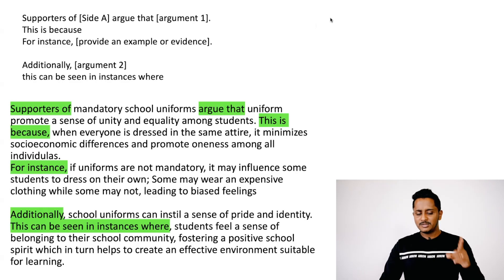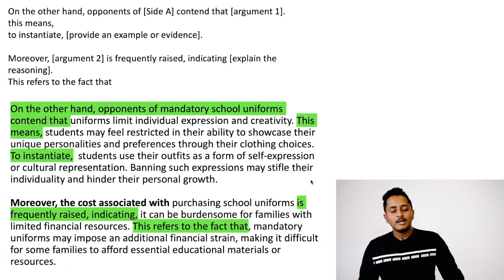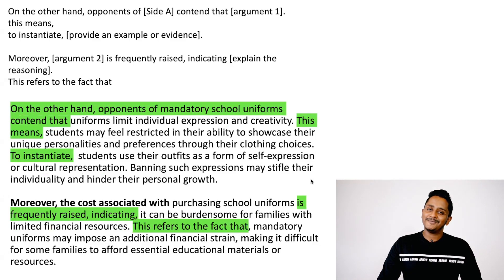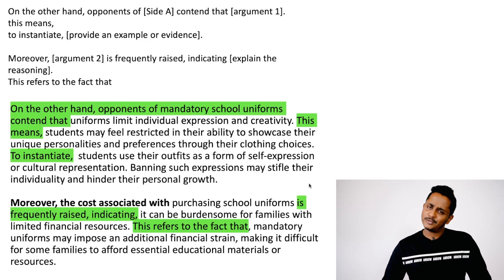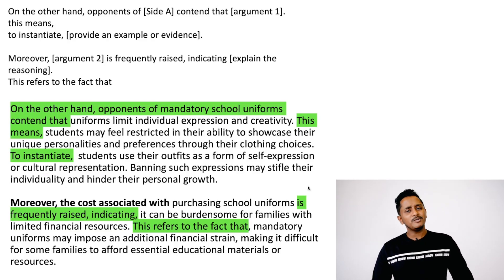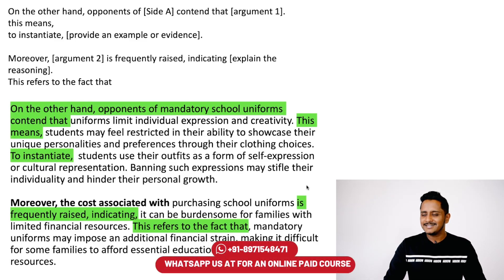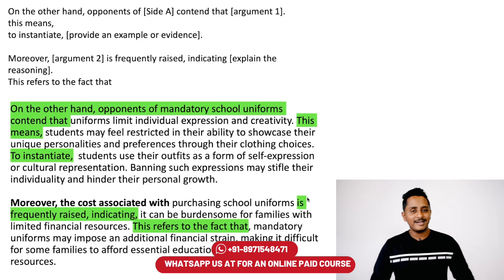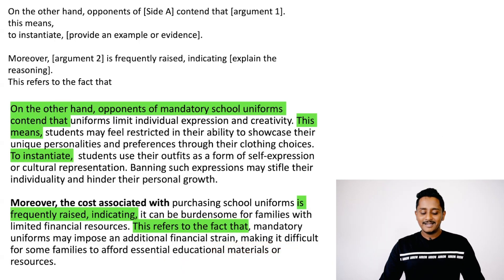Six to seven sentences. Use the exact words: 'supporters of...argue that,' 'for instance,' 'this is because,' 'additionally,' 'this can be seen in instances where.' Try to use the exact words. Now we go to the third paragraph — why you are against mandating school uniforms. On the other hand, if you mandate it, it restricts freedom of choice and creativity. Use the template: 'On the other hand, opponents of...'